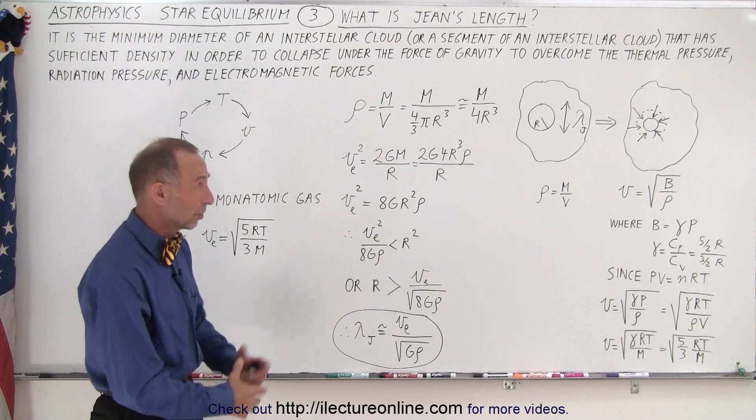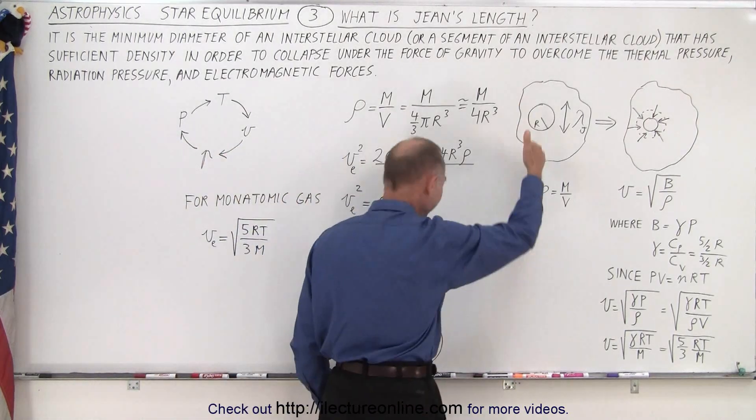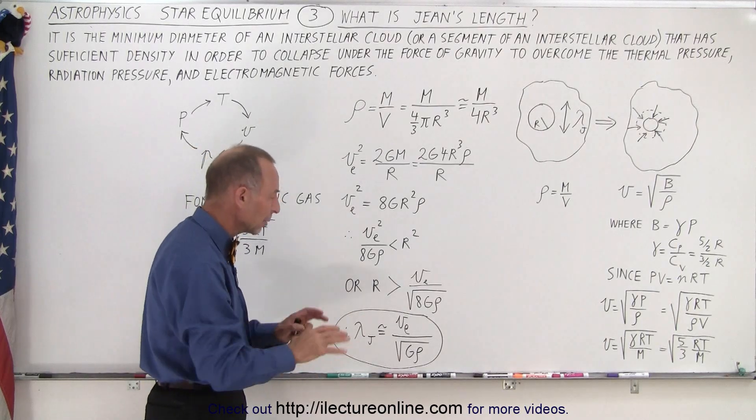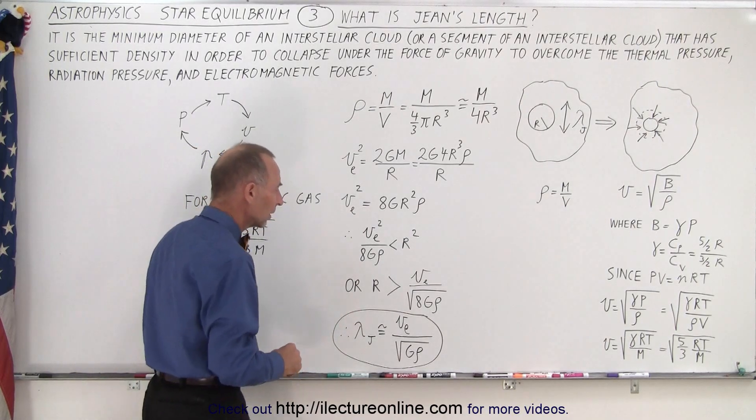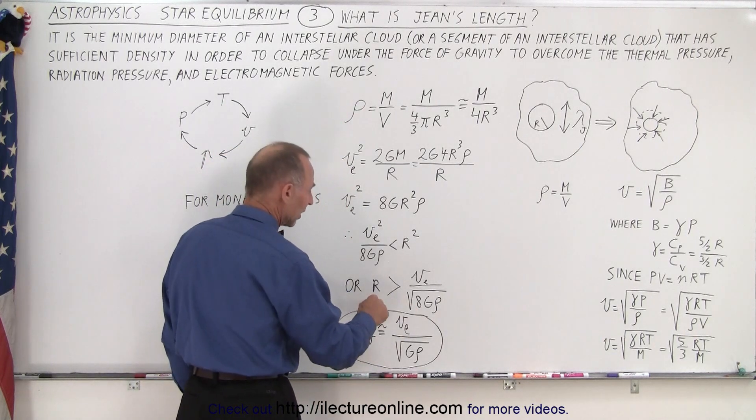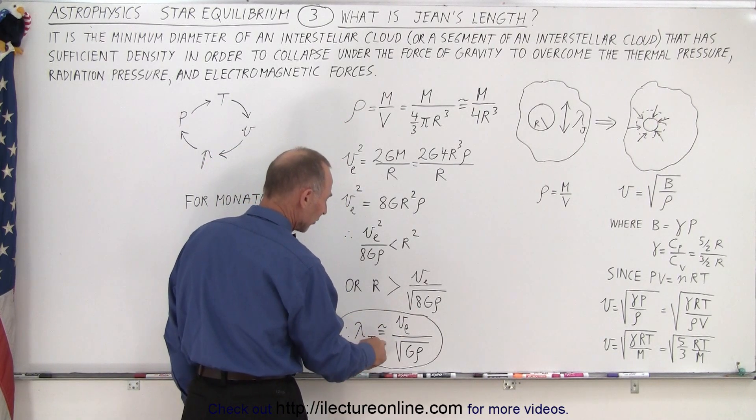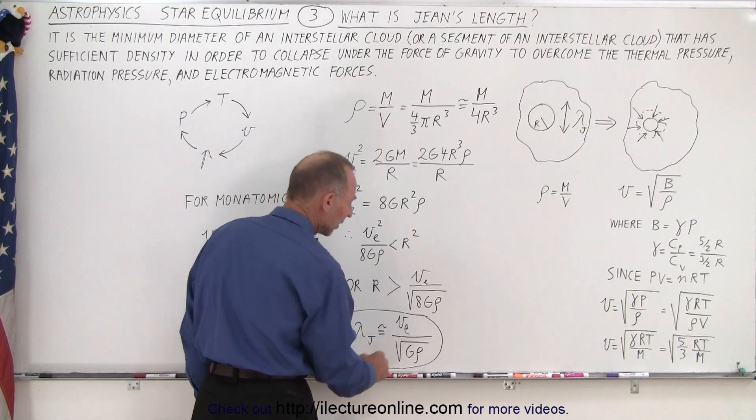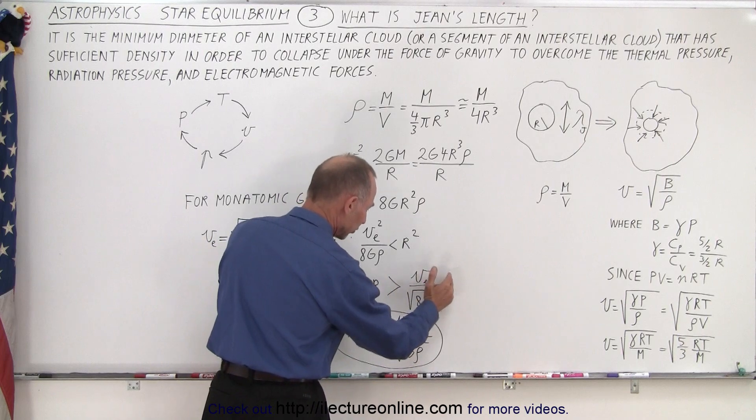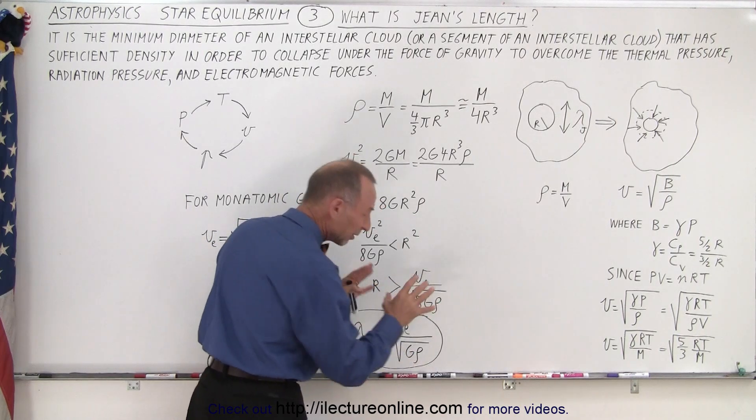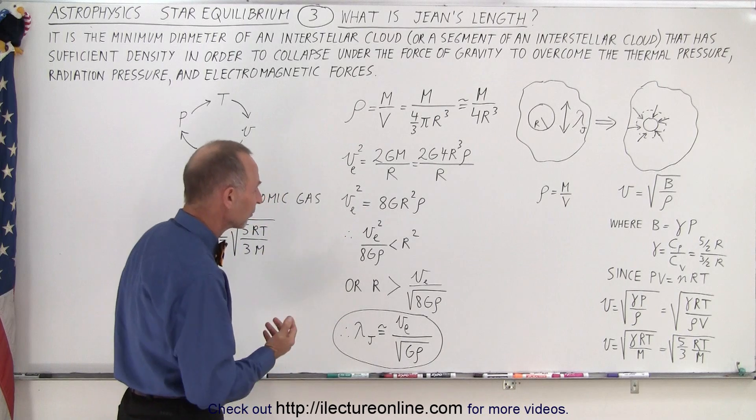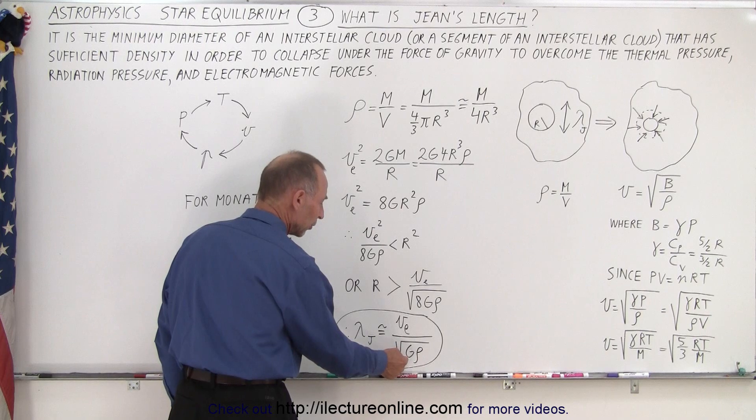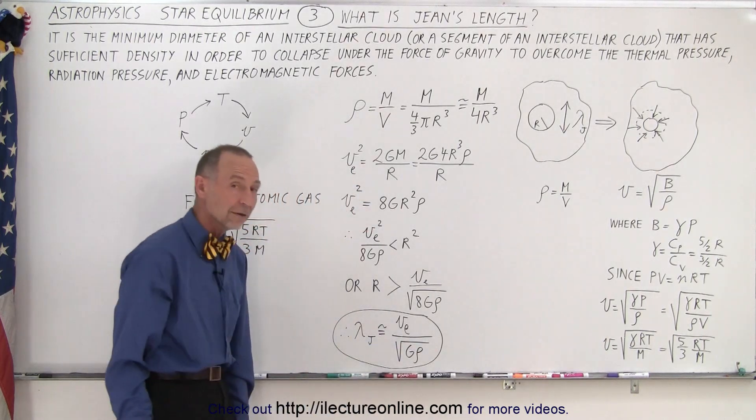So what is Jeans length then? Well, Jeans length would be twice the radius, and the square root of 8 is roughly about 2. Again, we're looking for rough comparisons. So that means we can go ahead and say we now have the Jeans length is therefore equal to the escape velocity divided by the square root of g times density. So we multiply both sides by 2 to get the Jeans length, and 2 divided by square root of 8 is roughly 1. And so therefore we say it's approximately equal to the escape velocity divided by the square root of g, the gravitational constant, times the density of the cloud.